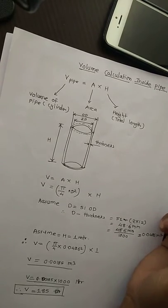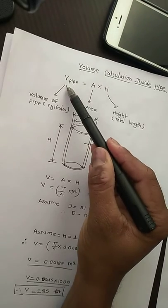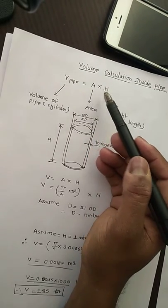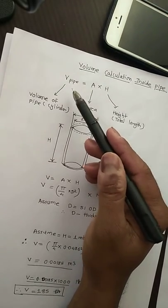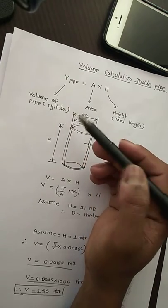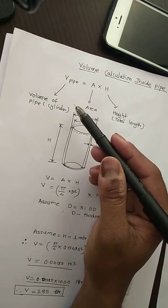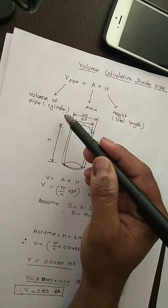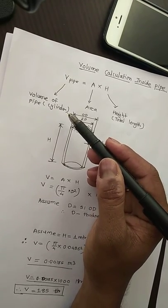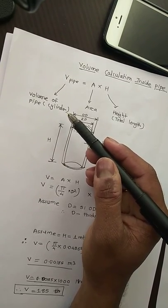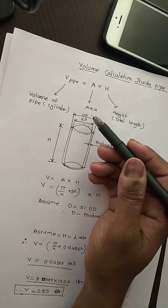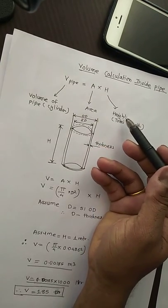For volume calculation we have the formula V = A × H. V is the volume of the pipe. Friends, we have to simply use the formula for the cylinder because the pipe is like a cylinder. A is the area, H is the total height.